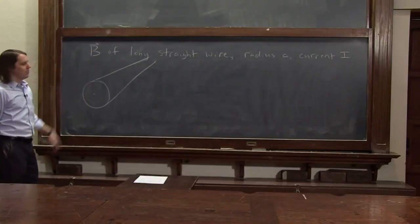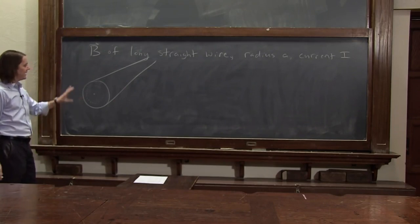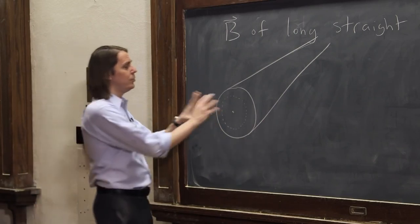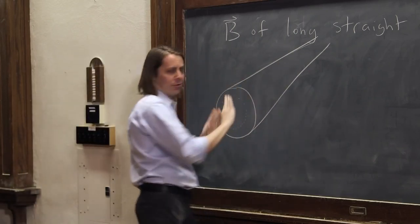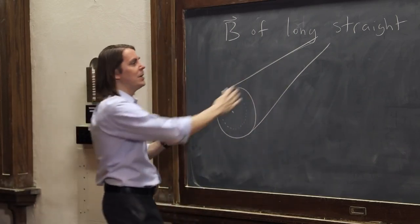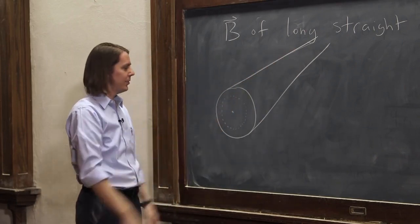So that would be one Ampereian loop we want to consider because it's symmetric. And keep in mind, in Ampere's law, they are loops. This is not a surface. This isn't a 2D representation of some surface cylinder. It's just a loop. I could draw it anywhere in the wire. I'm drawing it here because you can see it there.